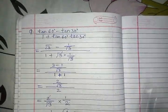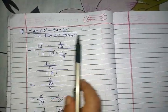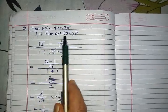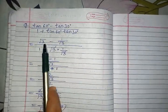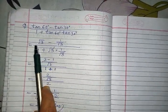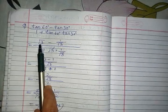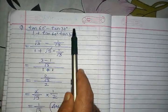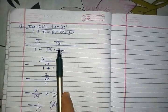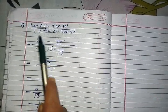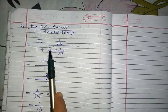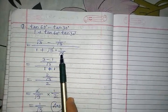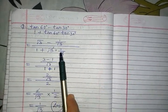Let me discuss one more question. The expression is (tan60 − tan30) / (1 + tan60·tan30). tan 60 = √3 and tan 30 = 1/√3. So we have (√3 − 1/√3) / (1 + √3·(1/√3)).